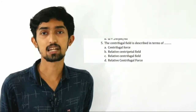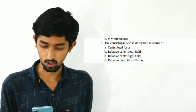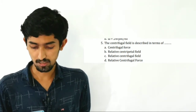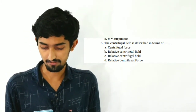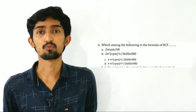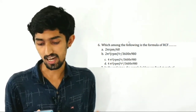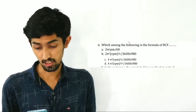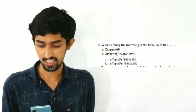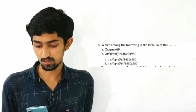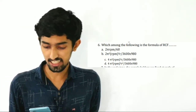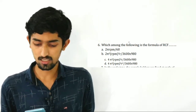The centrifugal field is described in terms of — Option A: Centrifugal force. Option B and C: Relative centrifugal field. Option D: Relative centrifugal force. Next: Which among the following is the formula of RCF? Option A: 2π rpm by 60. Option B: 2π² rpm² r divided by 3600 × 980. Option C: 4π² rpm² r divided by 3600 × 980. Option D: 4π² rpm² r² divided by 3600 × 980. The answer is Option C: 4π² rpm² r divided by 3600 × 980.